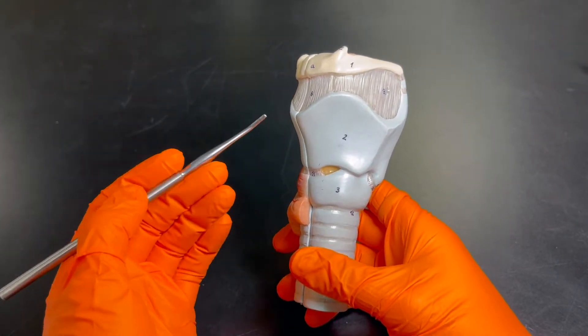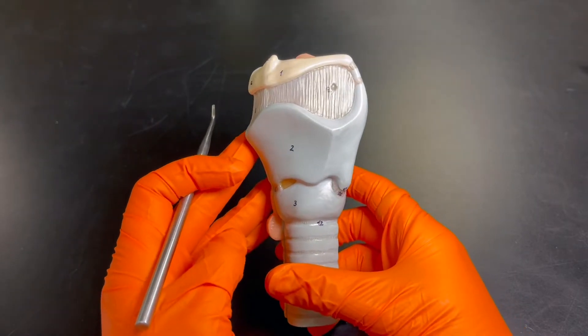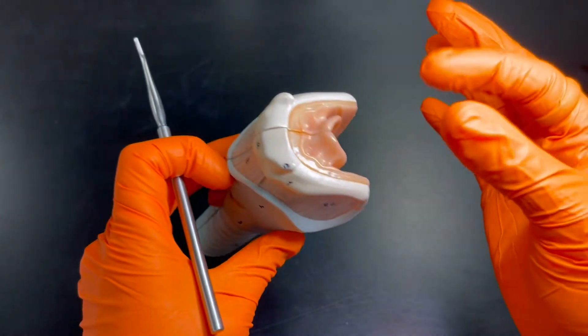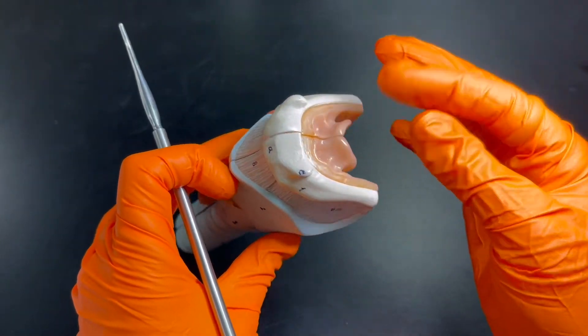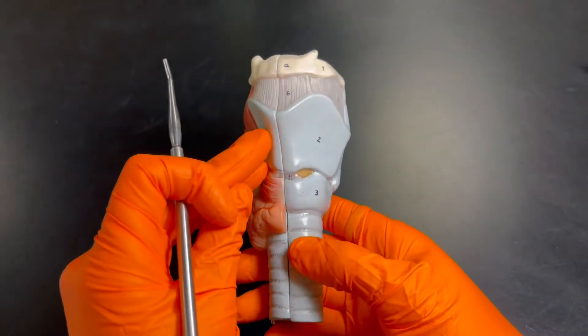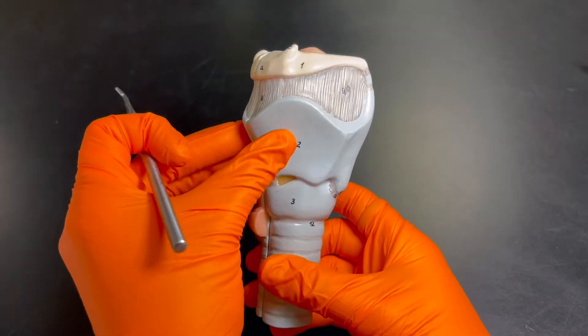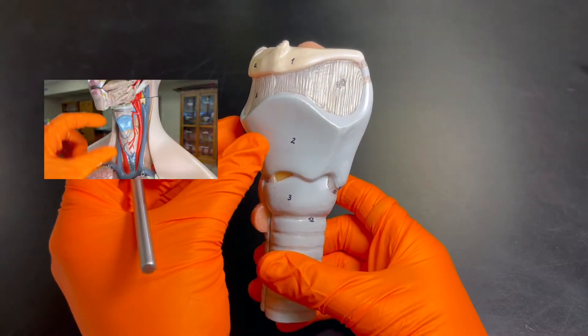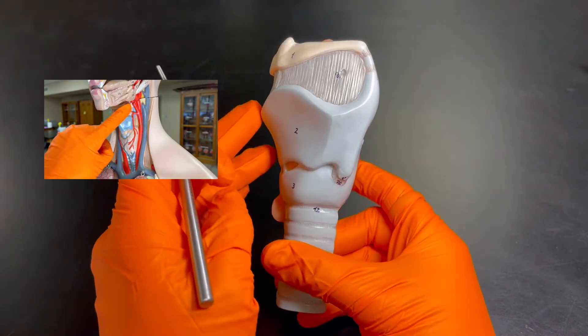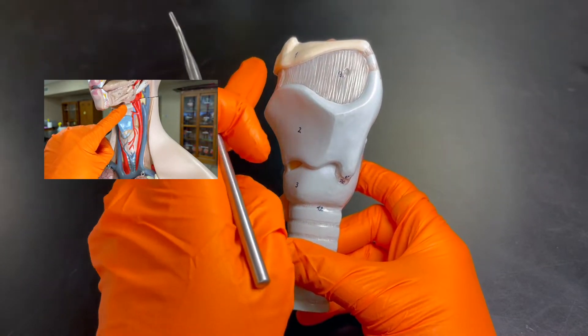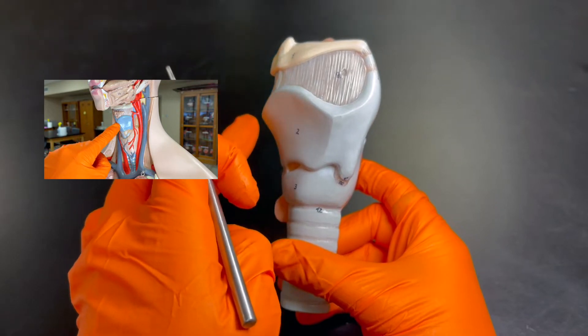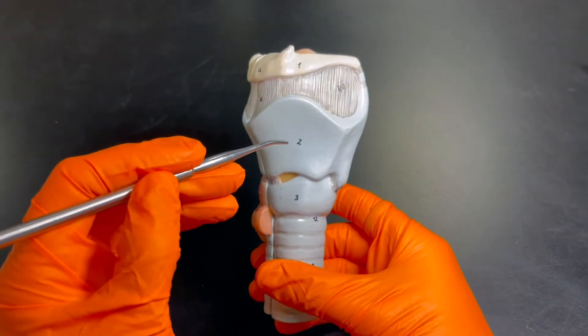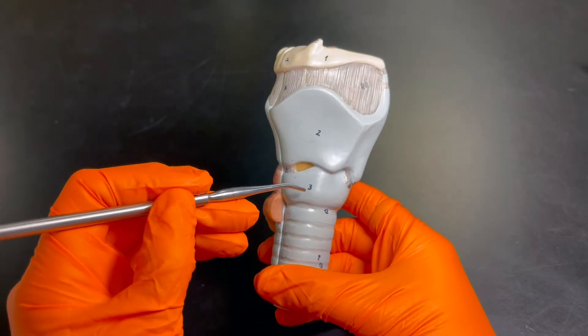Now remember, girls, we have testosterone as well, just not in as large quantities as males do. The other thing is there's an angle - it's called the laryngeal inlet - and in men it tends to be a sharper angle than it is in women, and so it kind of comes outwards a little bit more. If you've ever seen this kind of little bump in a man's neck, that's actually what you're looking at there, the thyroid cartilage.